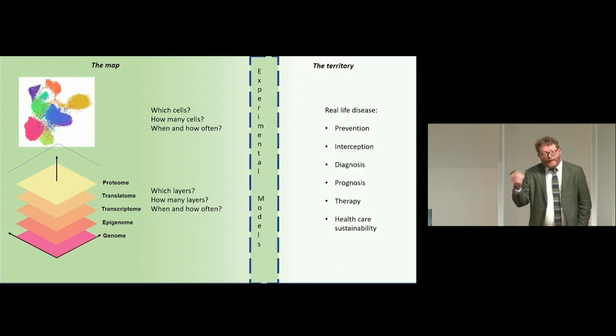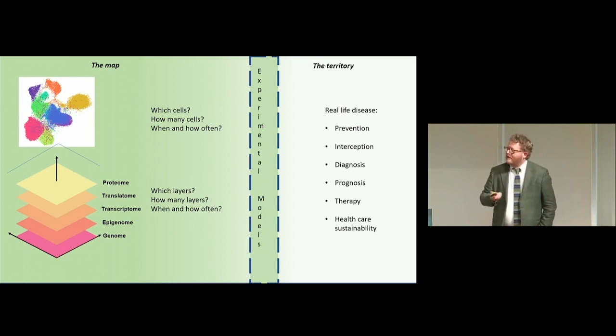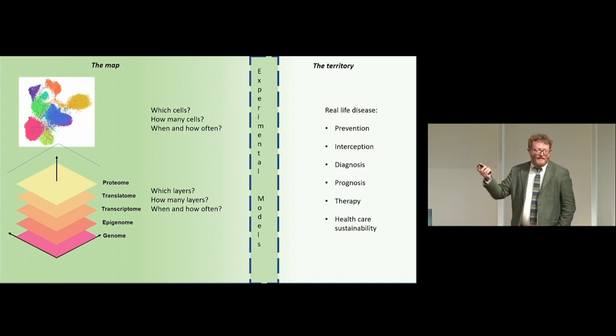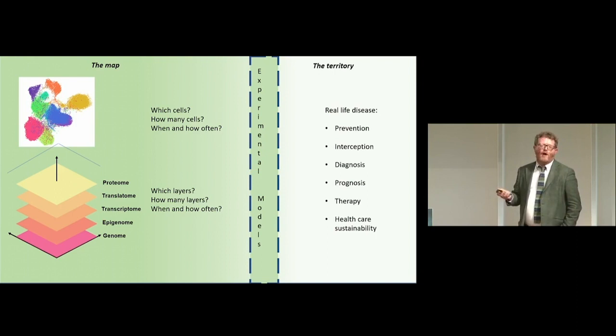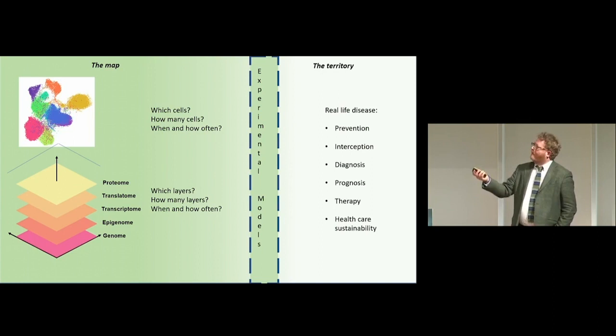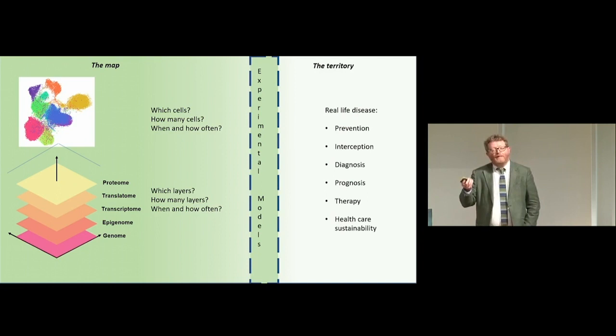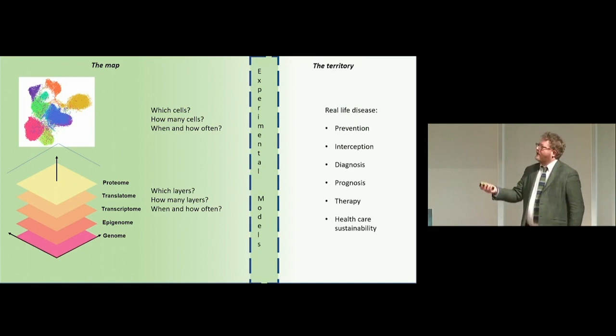We can outline this in more detail and with more specificity for LifeTime. One of the maps that by now you have grown accustomed to seeing represents the main layers that we would like to analyze in every single cell through the dynamics of disease unfolding. But which cells, how many cells, when and how often to actually profile — we really don't know yet. At which layer or combinations of layers will the map be most useful and actionable? These will be ultimately determined through the answers we get from experimental models.